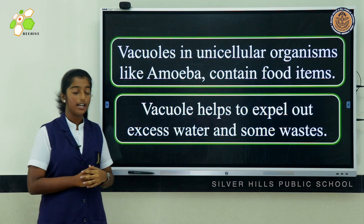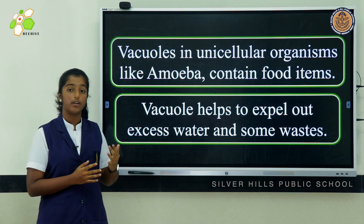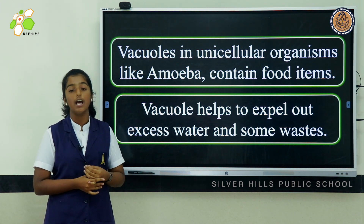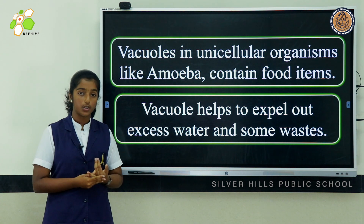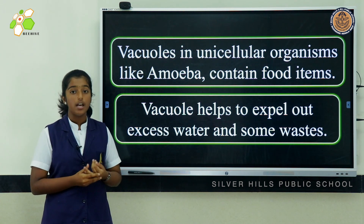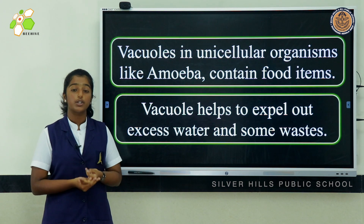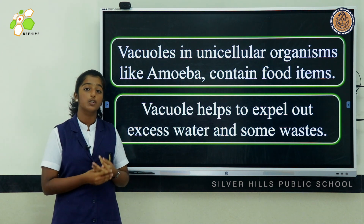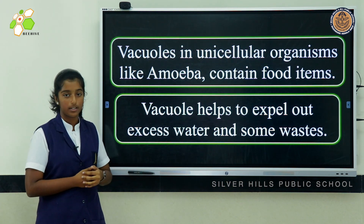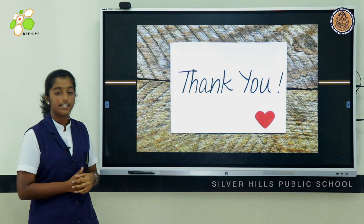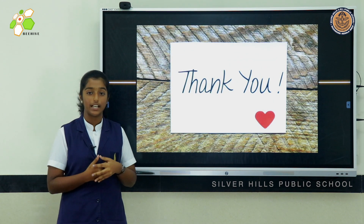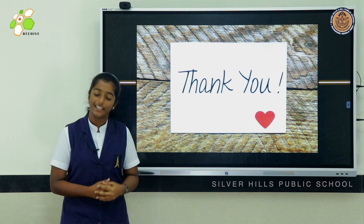So let's recall what we have learned today: lysosomes, which are known as the suicide bags of the cell; mitochondria, which is known as the powerhouse of the cell; plastids, which are of two types — chromoplasts and leucoplasts; and vacuoles. That's all for today's session. Hoping to meet you again with a new session and new topic. Thank you.